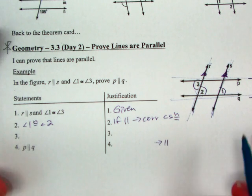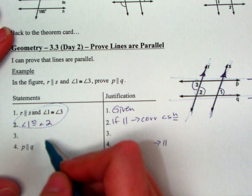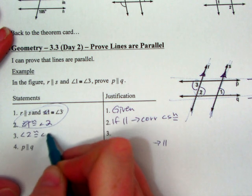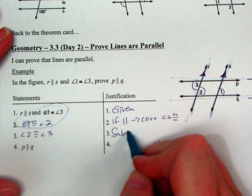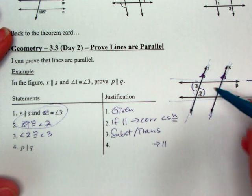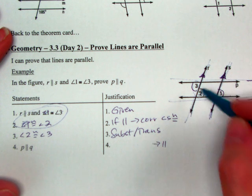So by default, with what I have so far, I can take out angle 1, and that means that 2 and 3 have to be equal. Substitution or transitive will work for this one. And then looking at what kind of angles 2 and 3 are, they're co-interior. So, I'm sorry, alternate interior.